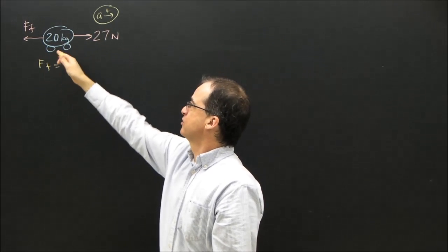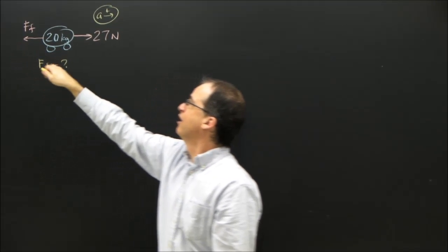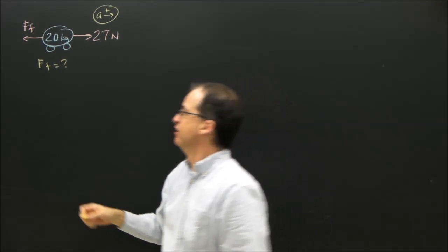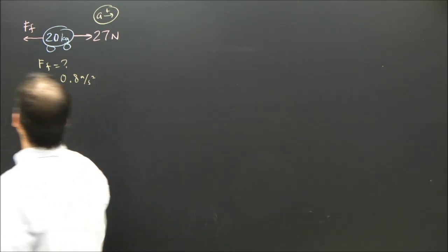Here's an object, 20 kilograms, being pulled by 27 newtons, and there's a force of friction on it. The question is, what is the force of friction if the acceleration is 0.8 meters per second squared?